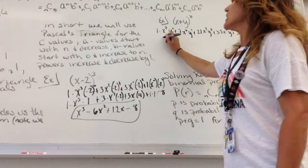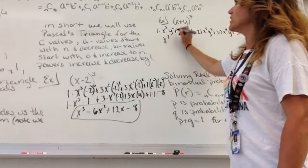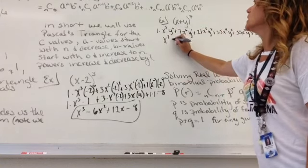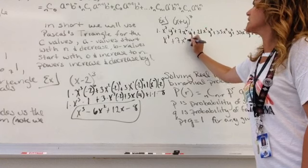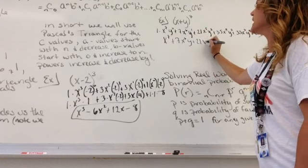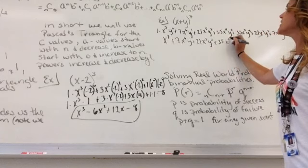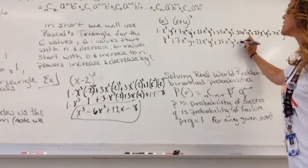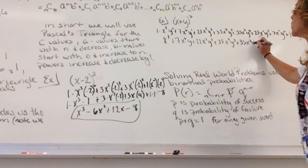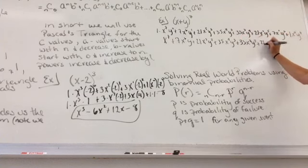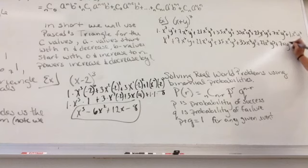Go back and simplify. So that's just x to the seventh, because y to the zero is one, plus seven x to the sixth y, plus twenty-one x to the fifth y squared, plus thirty-five x to the fourth y cubed, plus thirty-five x cubed y to the fourth, plus twenty-one x squared y to the fifth, plus seven x y to the sixth, plus y to the seventh. And we've expanded it.